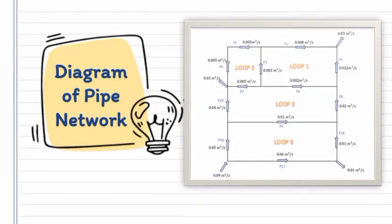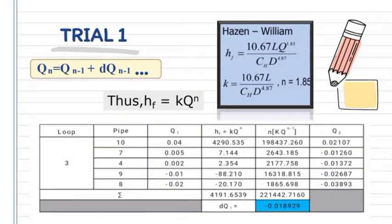This is the diagram of our pipe network system. First, we assume a discharge Q and its direction in each pipe of the loop. We consider the clockwise flow to be positive. Next, all the data like diameter, length, and the friction factor is given, so we just need to calculate the k and hf, which is the head loss of the fluid flow in a table. We use the equation which hf equals k times Q to the power of n, where k is equal to 10.67 times length divided by the coefficient of the pipe times the diameter to the power of 4.87. The coefficient we use is cast iron pipe, which is equal to 100, and the n is equal to 1.85.